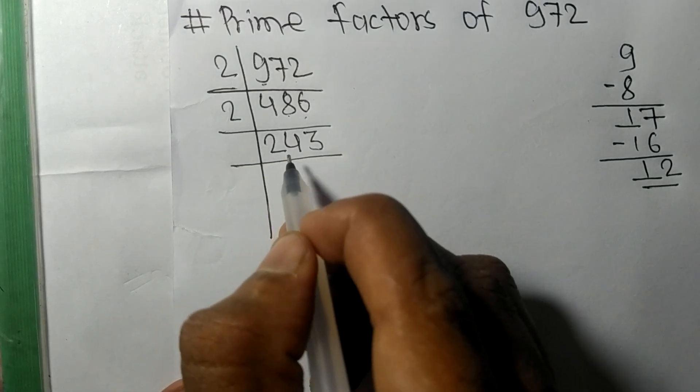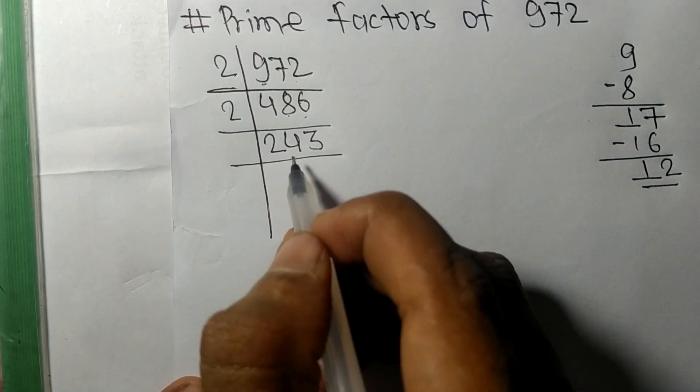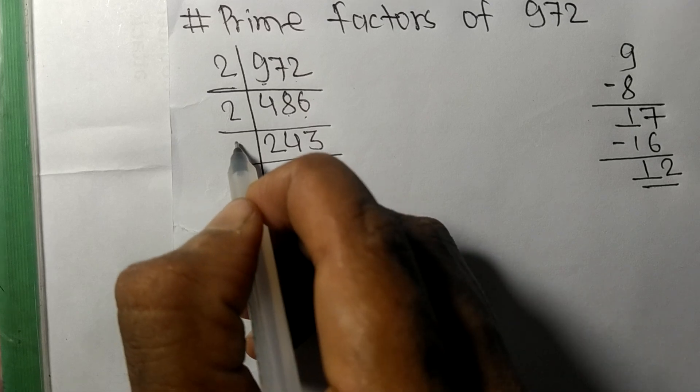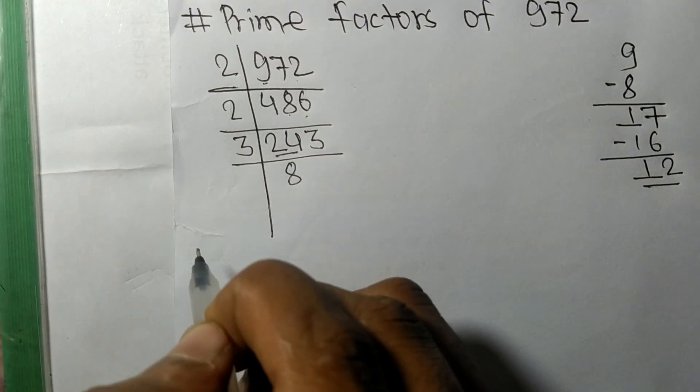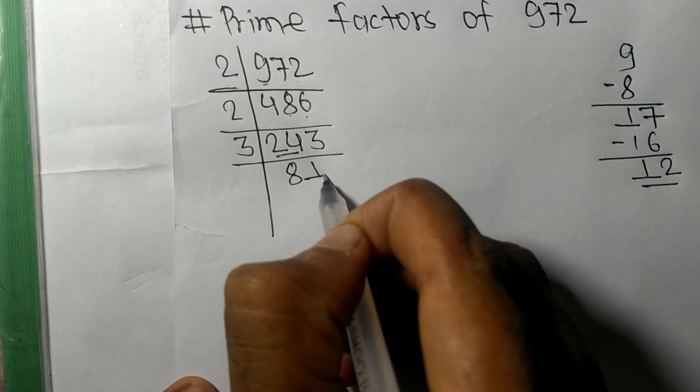Now we got 243 which is exactly divisible by 3. So 3 times 8 means 24, 3 times 1 means 3.